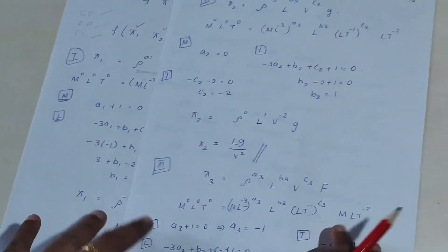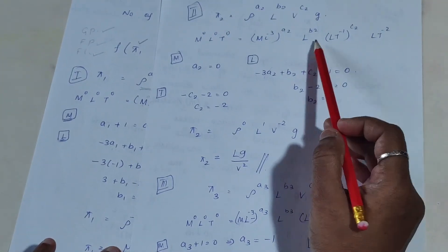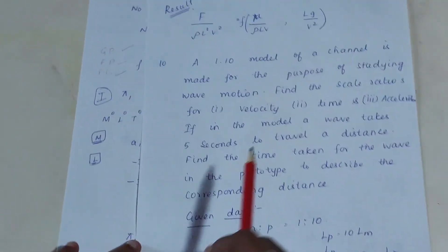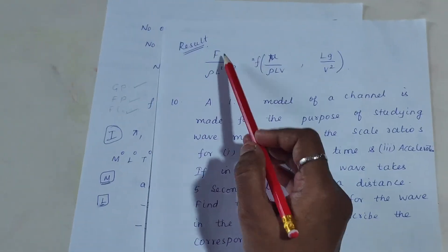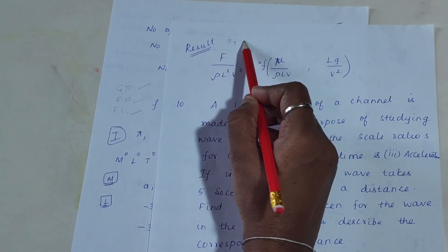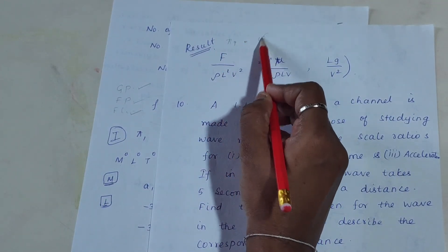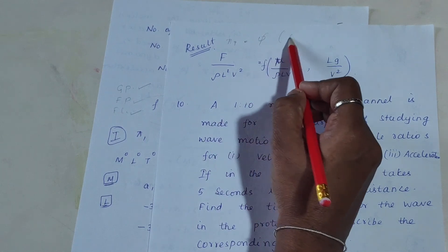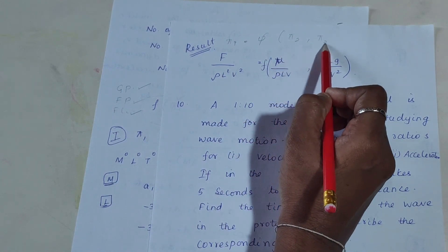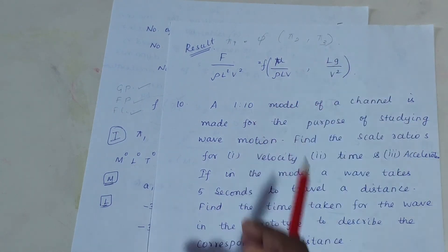In the same way, find π₂ and π₃. Finally, write down the complete equation: π₁ = f(π₂, π₃). That is your final answer.